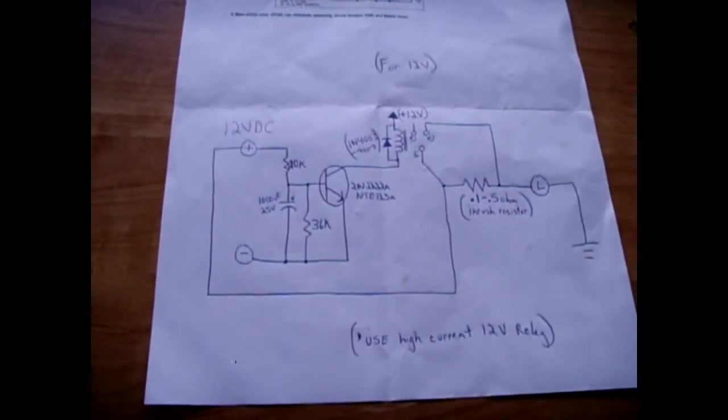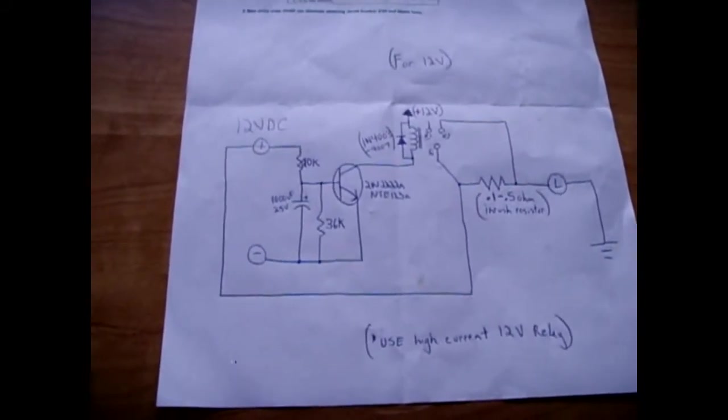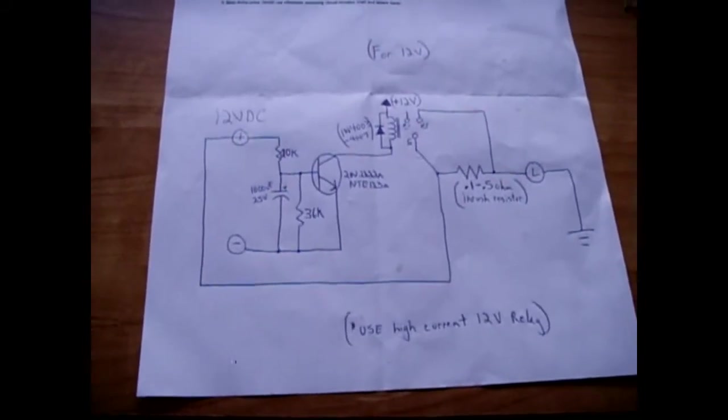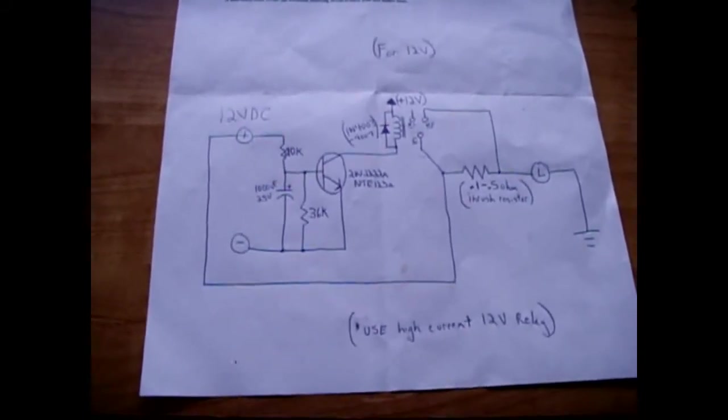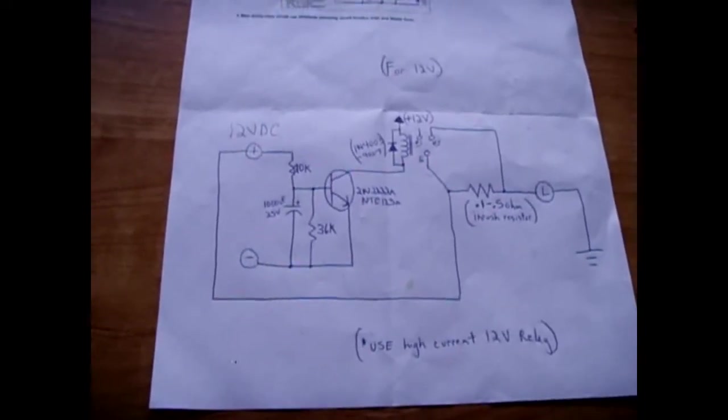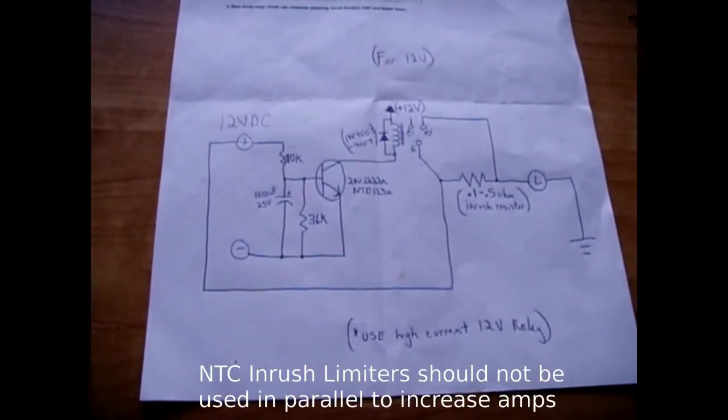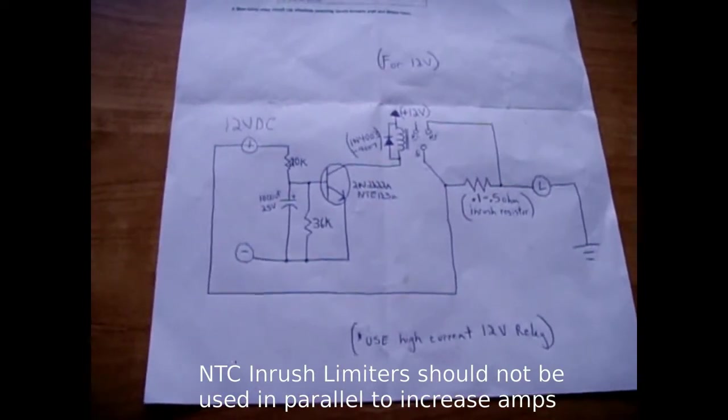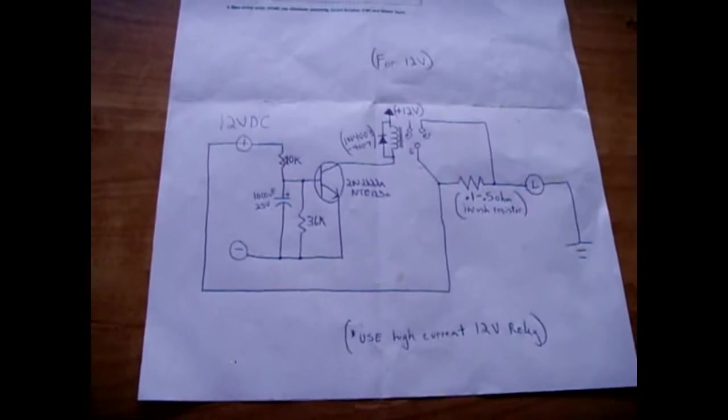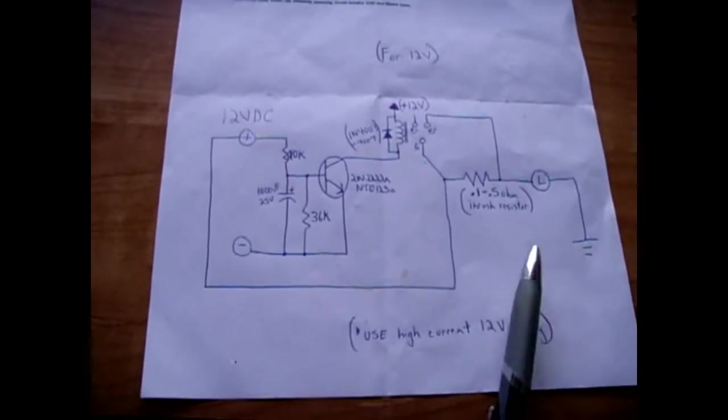Now the problem you have with the NTC inrush limiting thermistors is the amperage rating of those thermistors is generally under 10 amps. So if you're dealing with a circuit that's 20 or 30 amps, you're not going to be using that thermistor. The other problem you have is they generate a lot of heat. Once the current goes into the circuit they're cool, but as the current flows through the thermistor it gets very hot, making the resistance drop into the circuit.